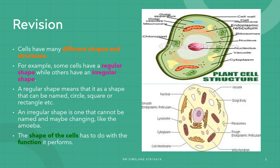Cells have different shapes and structures. The plant cell has a regular shape because it contains a cell wall — a regular shape meaning the shape can be named, such as a circle, square, or rectangle. The animal cell, on the other hand, has an irregular shape, meaning the shape cannot be named and may change. This is because an animal cell does not contain a cell wall.